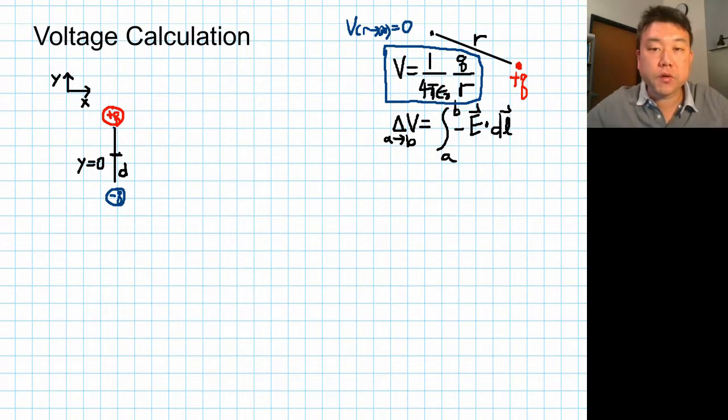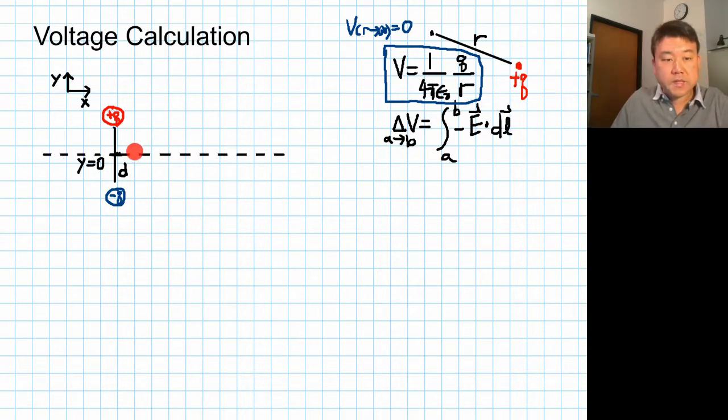So a simple question we could now ask is what is the voltage at point where y is equal to zero? By which I mean these points. So the points along these dotted lines are all the points where y is equal to zero. So we could parameterize this point. Say if I have a point here, then the coordinate for this point would be x and y is equal to zero. So that's the question. What is the voltage at a point x distance away from the dipole?